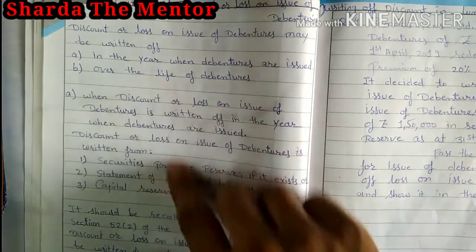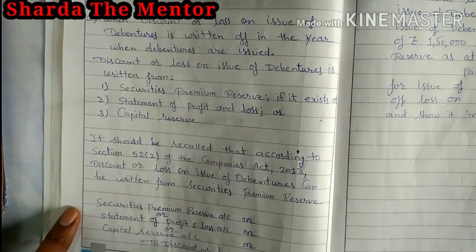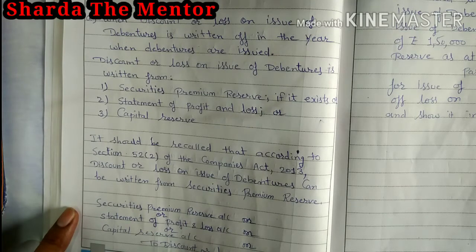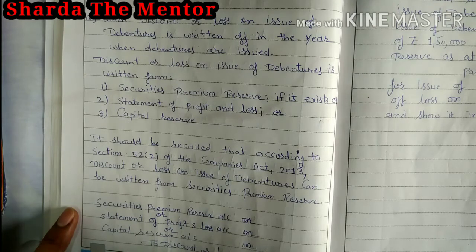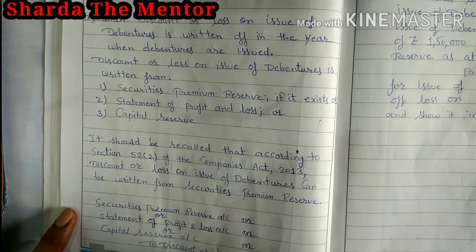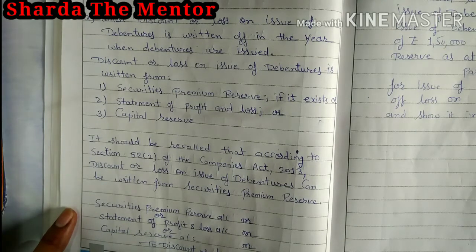From where can we write off discount or loss on issue of debentures? Discount or loss on issue of debentures can be written off from: first, the Security Premium Reserve — if it exists, meaning if you have a security premium reserve balance, you can write it off from there. Second is the Statement of Profit and Loss — at the end of the year, for example in 2020, if ₹50,000 is the loss, that will be written off through the Statement of Profit and Loss. The third source is Capital Reserve.